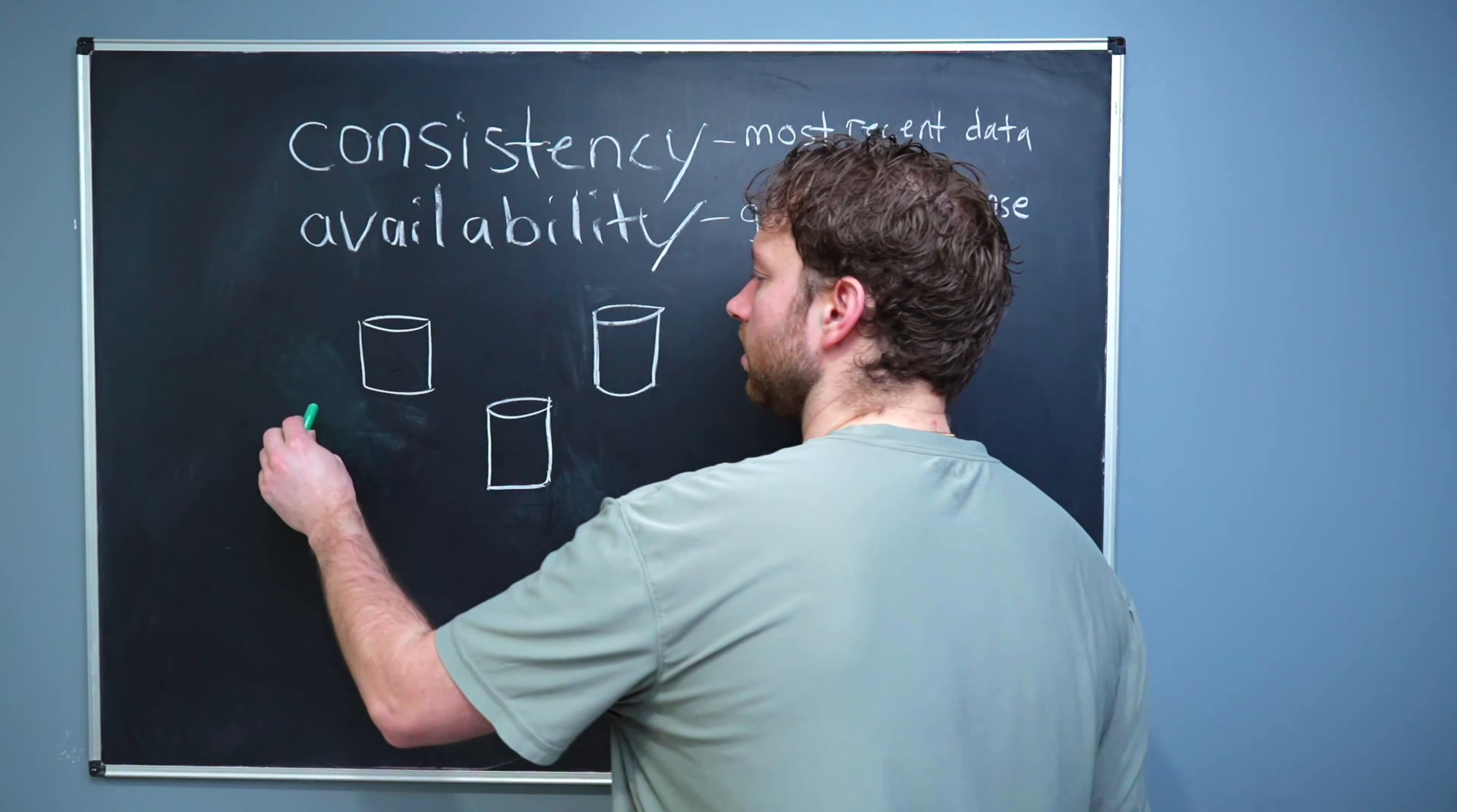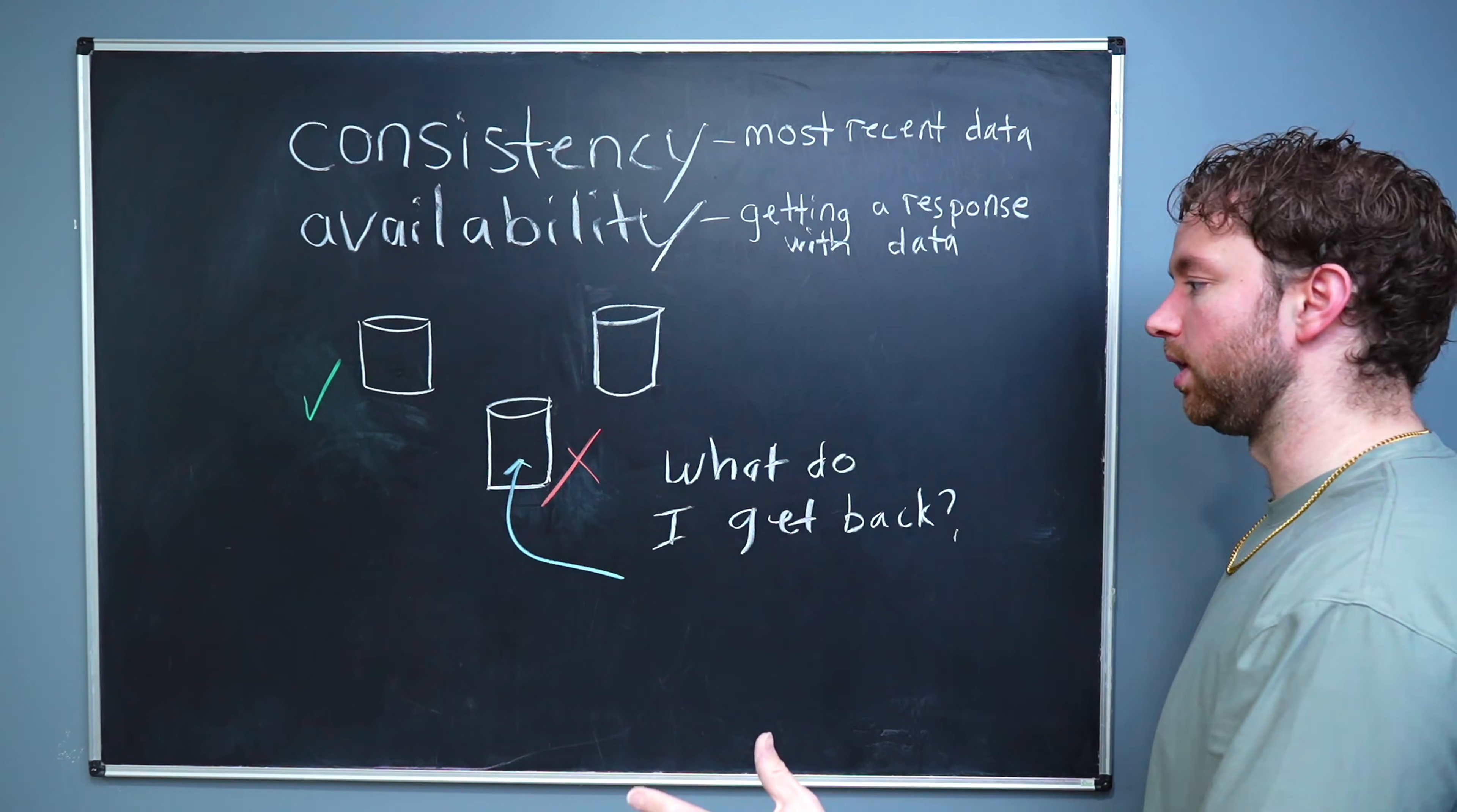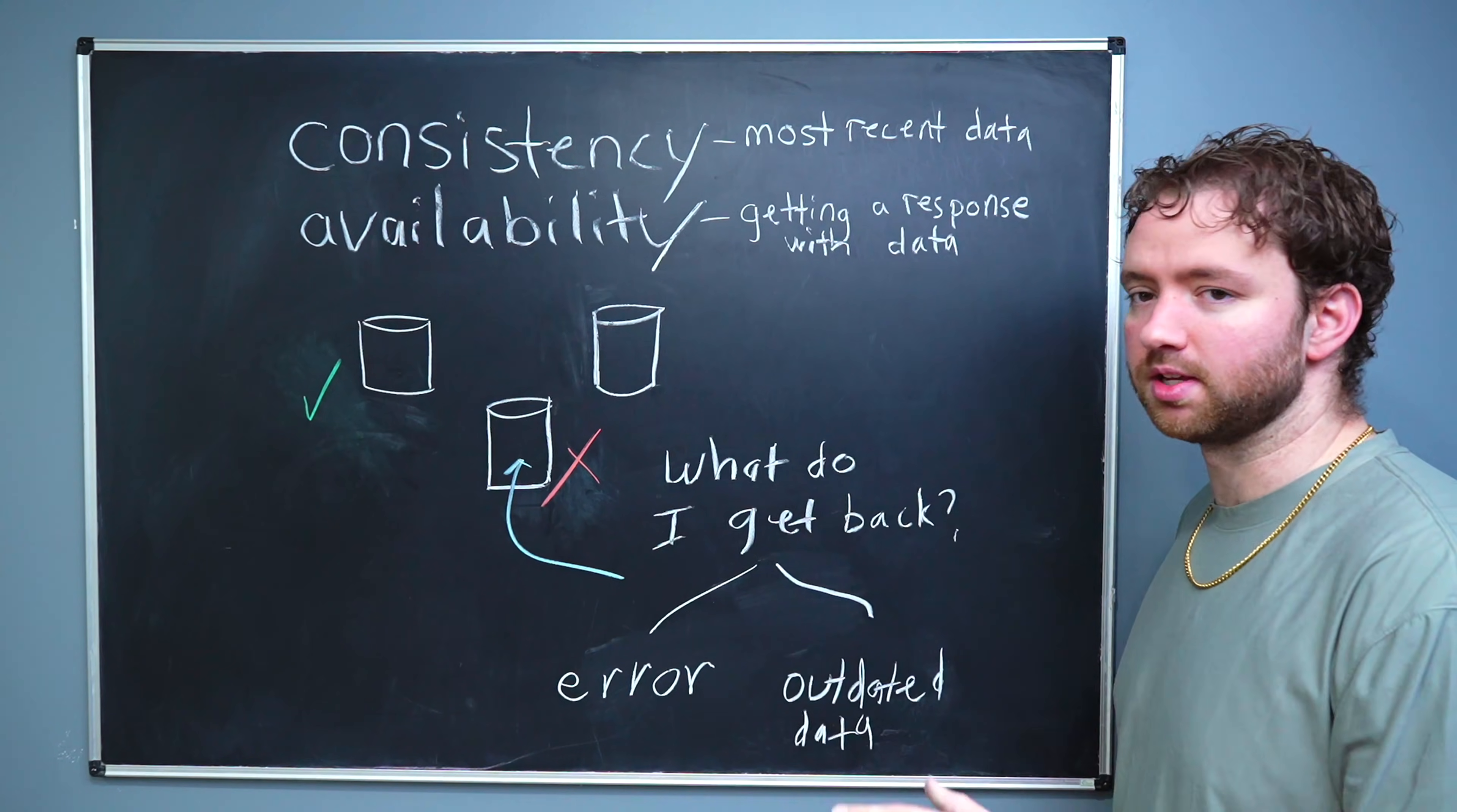To understand this, let's go through a quick scenario where for some reason something happens and this node has the most up-to-date data. And at this moment, this node is still functional, but for some reason it has outdated data. So these are not in sync. And then I make a request to this node. And the question is, what do I get back? If you wanted to guarantee both of these, you would have to have the most recent data and get a response. But we can't offer both of those in this scenario because we don't have the most recent data. So we can either give an error or give outdated data.